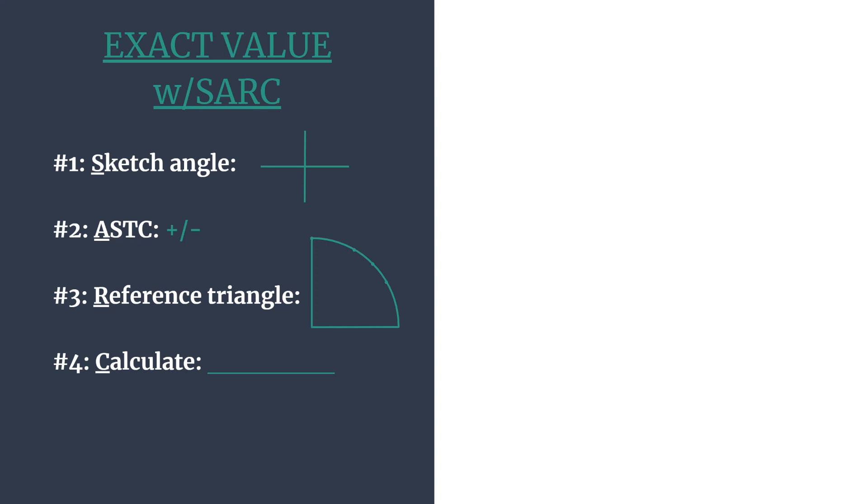So a quick breakdown: S stands for sketch the angle's terminal side. A helps you think of ASTC, which is the acronym to tell you which trig functions are positive in each quadrant, and that'll help you decide if your final answer is going to be positive or negative. The R stands for your reference angle and the special right triangle and coordinates to go with it, and the C stands for calculate the trig ratio.